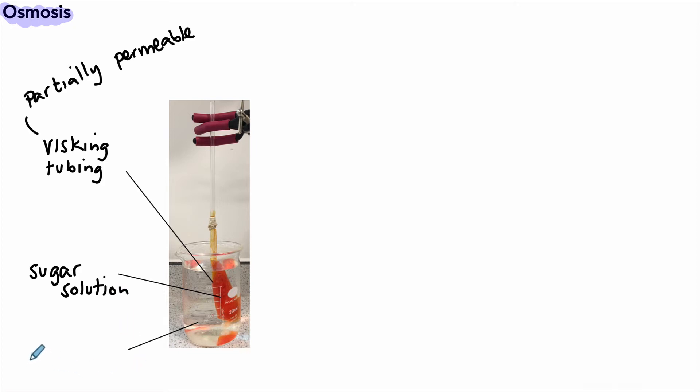So there's our sugar solution, and this is all in a beaker of pure or distilled water. This is all connected to a glass tube over here, and that's connected to the visking tubing.